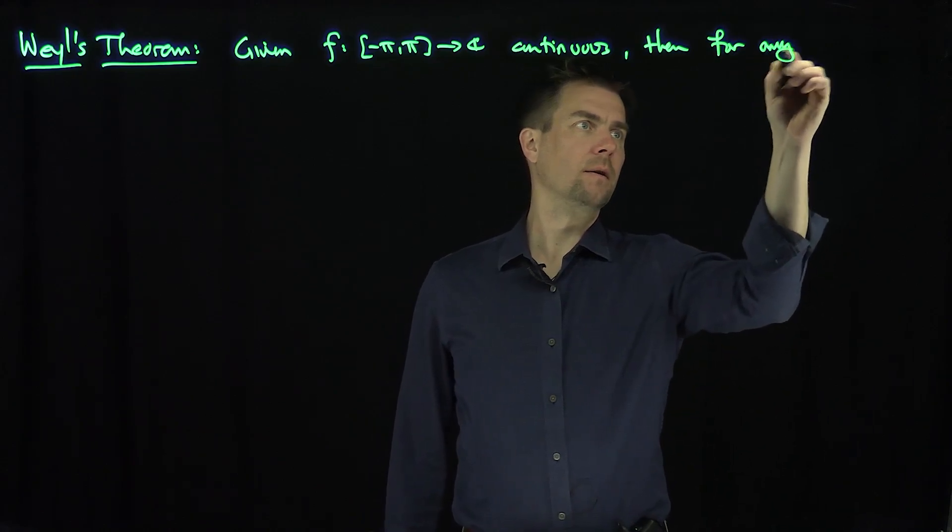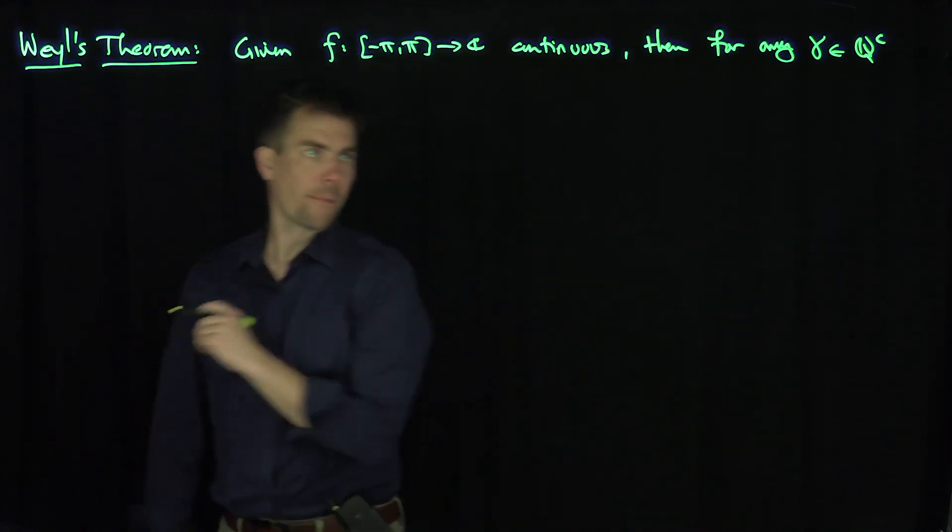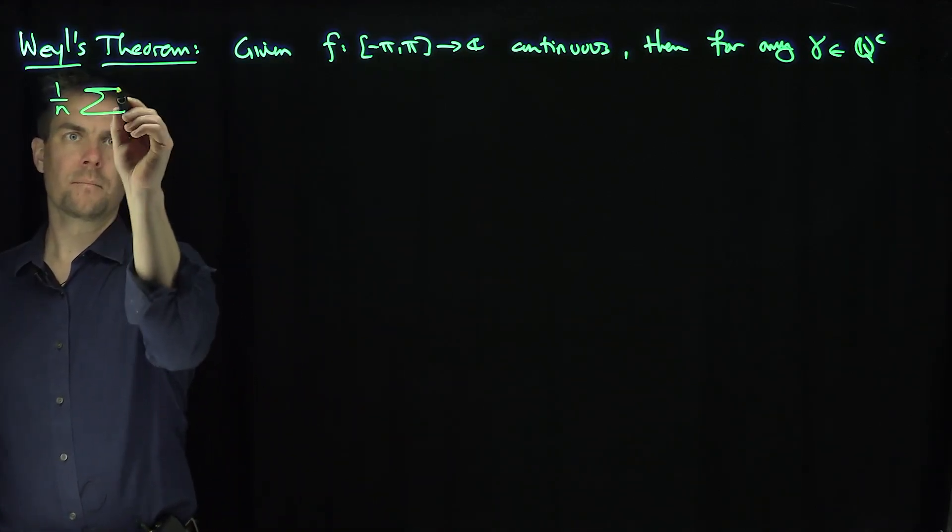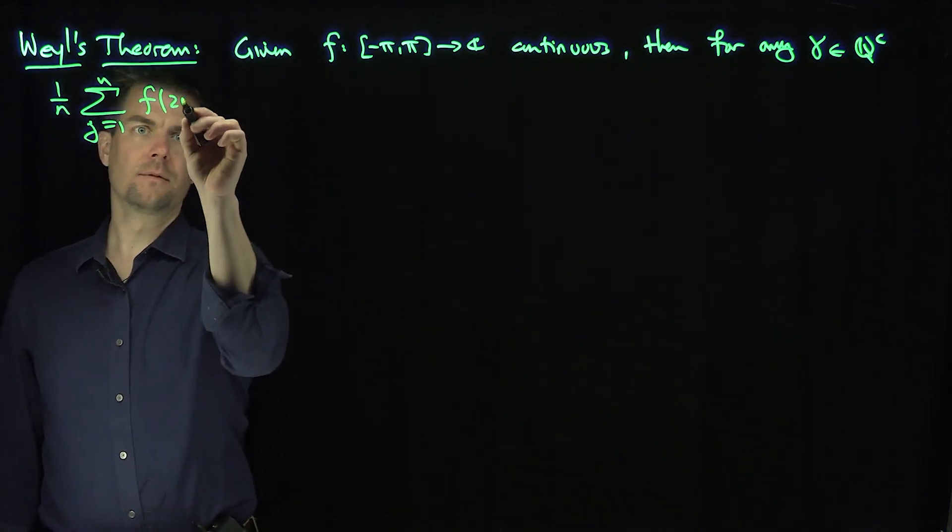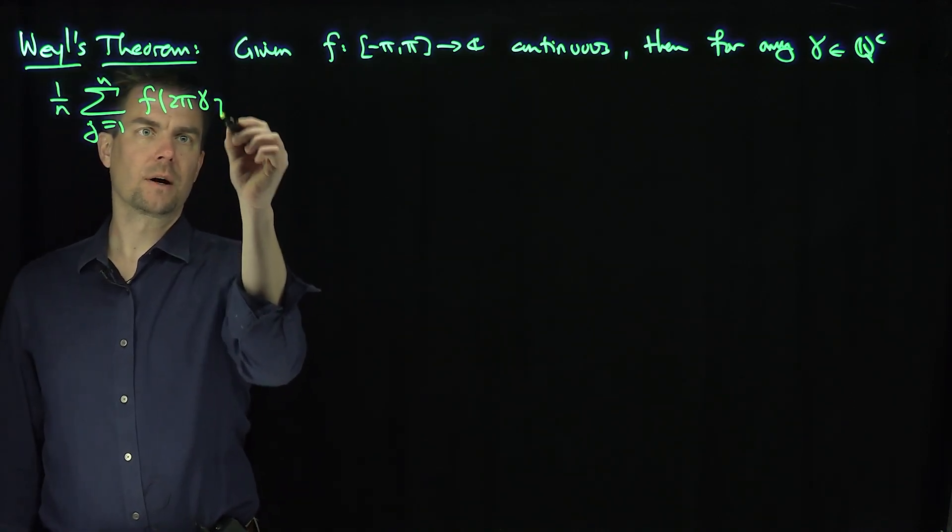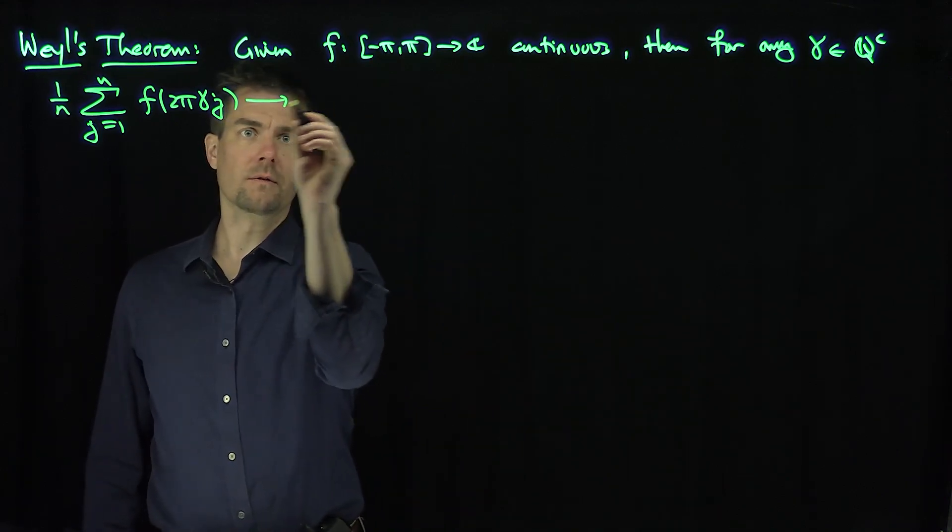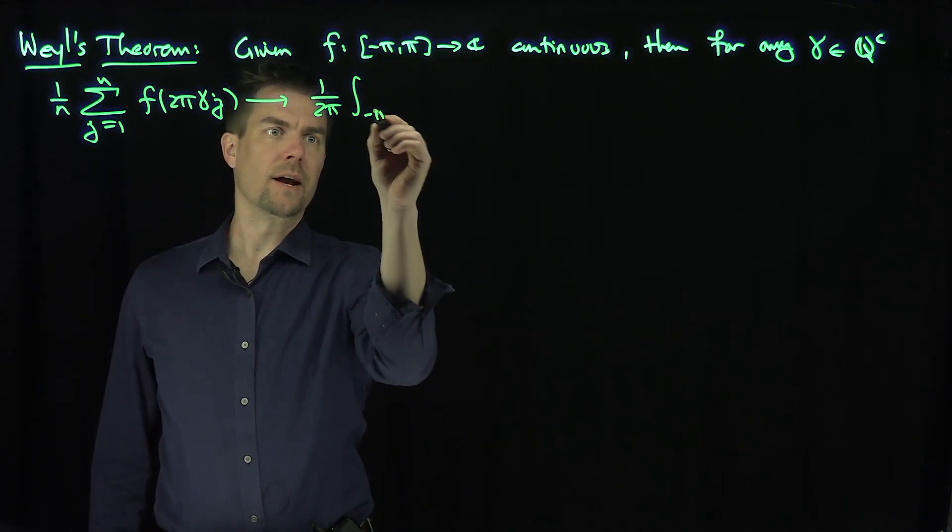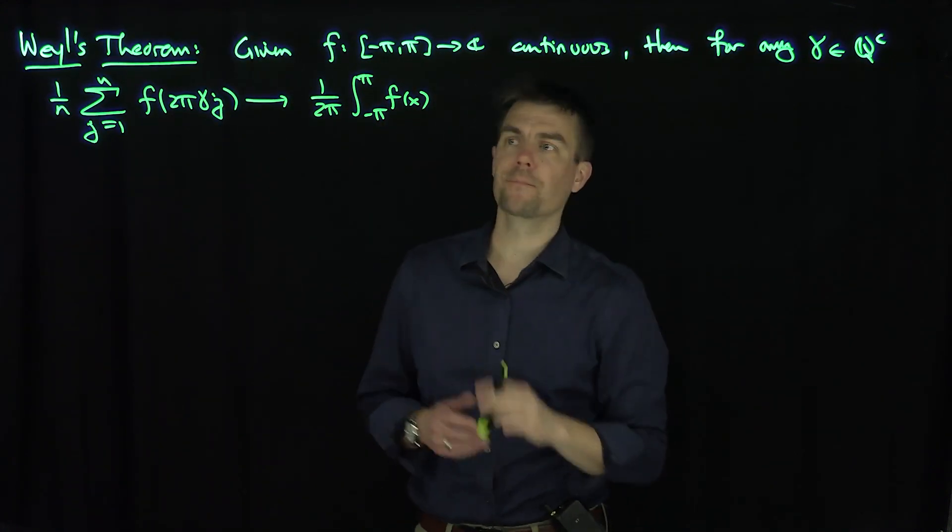for any γ irrational in Q, we have that 1 over n, the sum j goes from 1 to n, F of 2πγj, converges as n goes to infinity, converges to 1 over 2π, the integral from negative π to π, F of x dx. So we have this theorem. This is Weyl's Theorem.